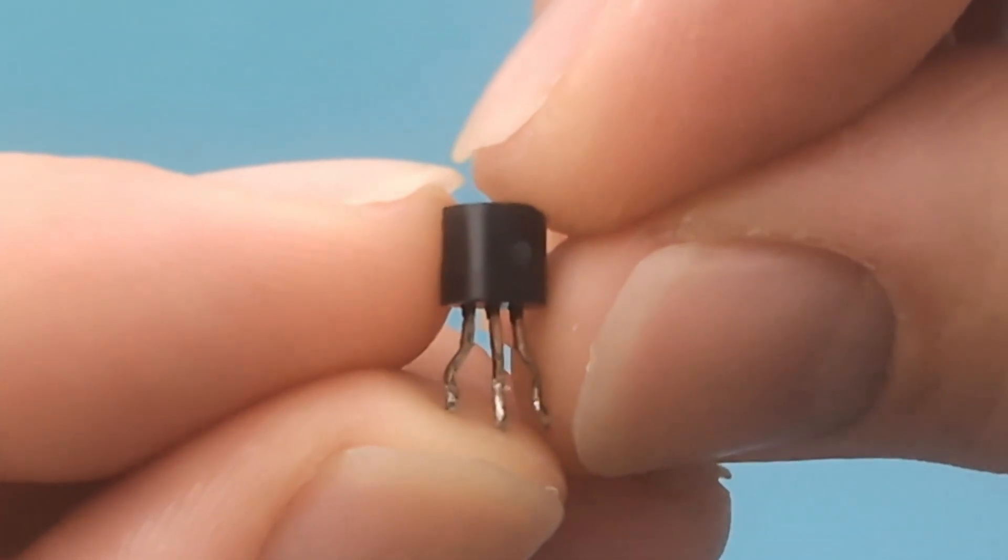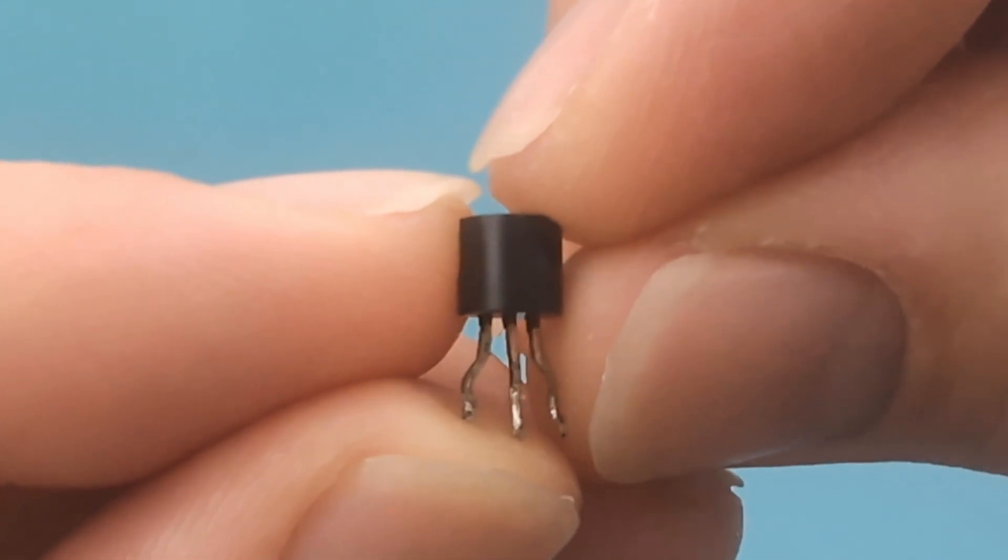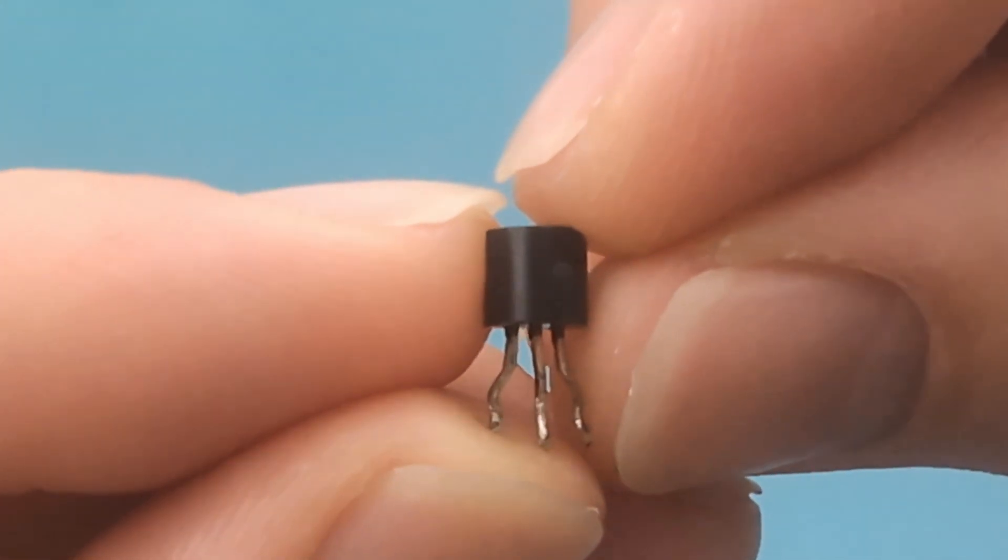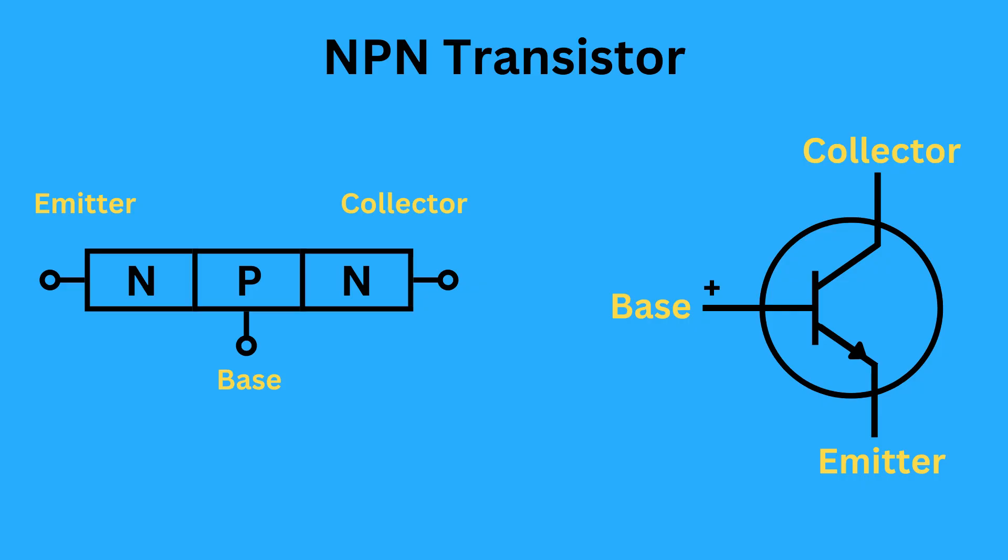BJTs are made up of three layers of semiconductor material, forming two PN junctions. They come in two types, NPN and PNP. In NPN transistors, the layers are arranged as NPN.